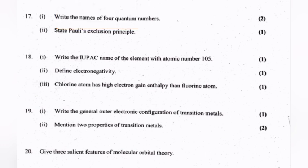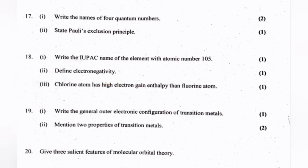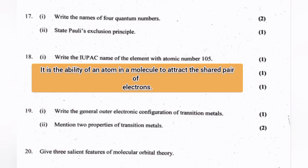Write the IUPAC name of the element with atomic number 105. Define electronegativity. It is the ability of an atom in a molecule to attract the shared pair of electrons.